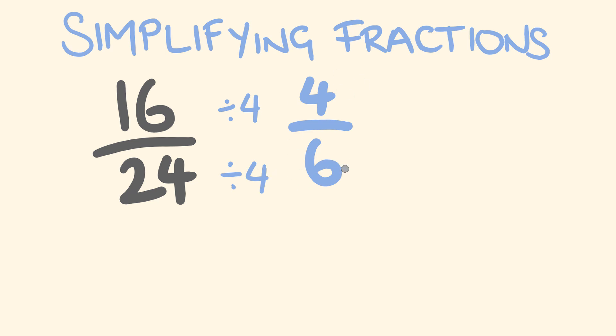and 24 divided by 4 is equal to 6. Now, what you can see here, as you can see with this particular fraction here, it can be taken further. There is a common factor that goes into both 4 and 6, which is 2. So, if I just do this, divide by 2, divide by 2, what do we get? 4 divided by 2 is equal to 2, and 6 divided by 2 is equal to 3.